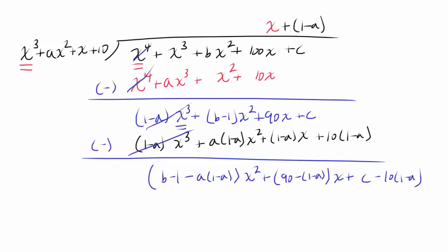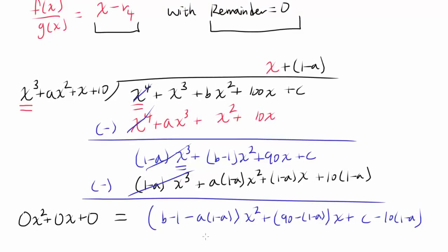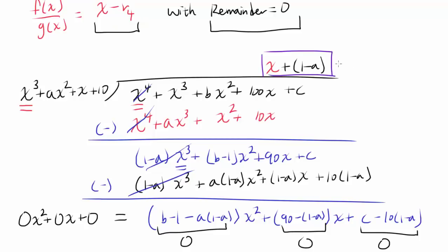This remainder tells us a great deal about our constraints, because we know the remainder of this division has to be 0. So the entire expression equals 0x² + 0x + 0, meaning every coefficient must be zero. We get three equations: B − 1 − A(1 − A) = 0, 90 − (1 − A) = 0, and C − 10(1 − A) = 0. We also know the quotient equals (x − R₄), so (1 − A) = −R₄.